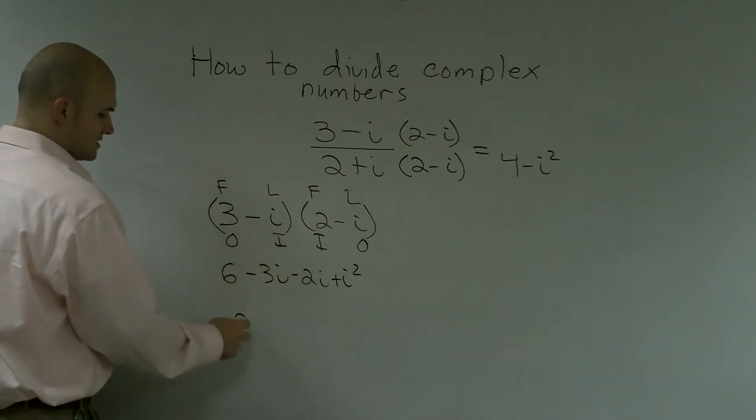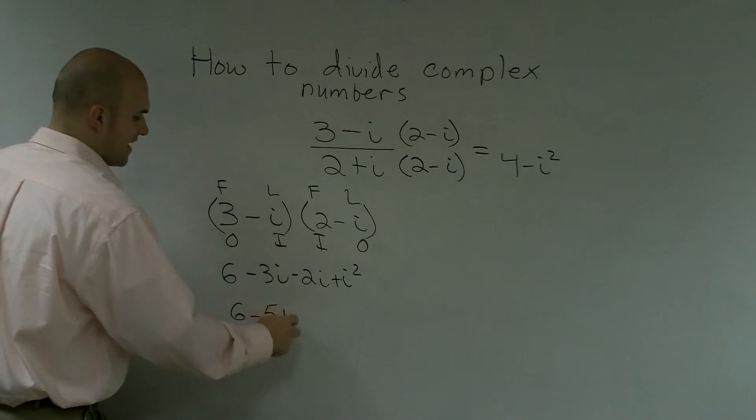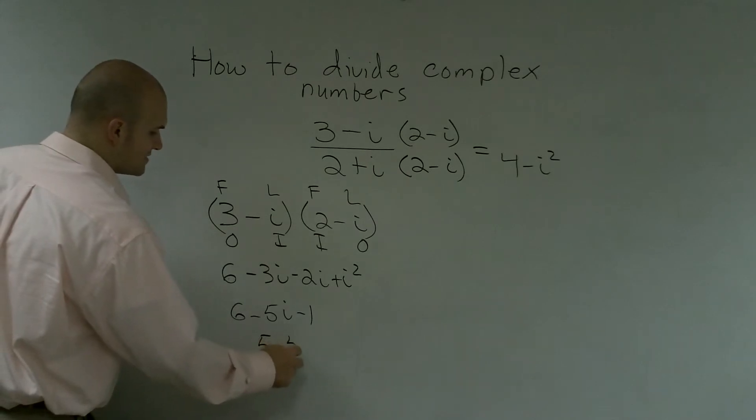So therefore, now you're going to get 6 minus 5i. And then i squared is minus 1. So therefore, this ends up being 5 minus 5i.